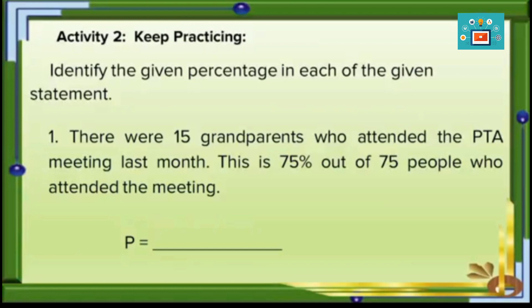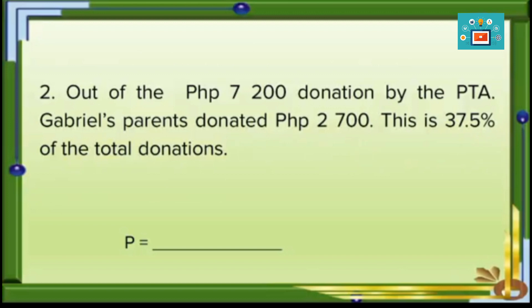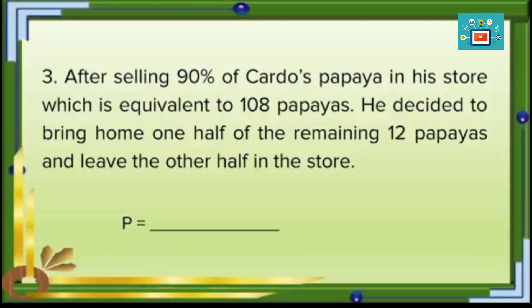Activity 2 — Keep Practicing. Identify the given percentage in each statement (do not solve, just identify). Problem 1: 15 grandparents attended the PTA meeting — this is 75% out of 75 people who attended. Problem 2: out of 7,200 pesos donated by the PTA, Gabriel's parents donated 2,700 pesos, which is 37.5% of the total. Problem 3: after selling 90% of Cardo's papayas, equivalent to 108 papayas, he decided to bring home half of the remaining 12 papayas. Identify the percentage in each problem.